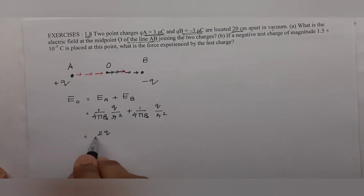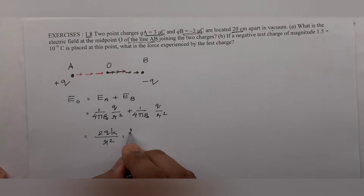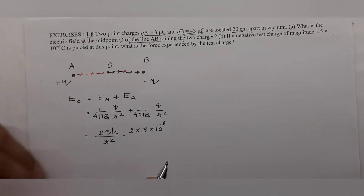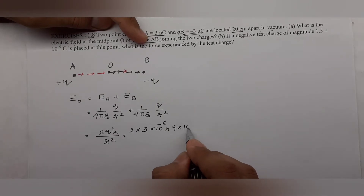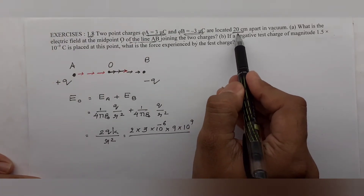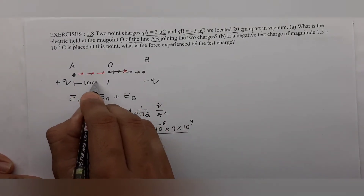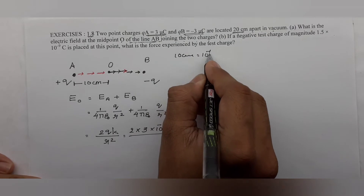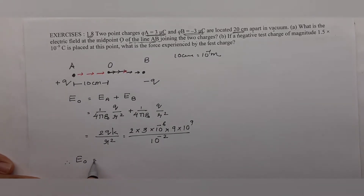So Eo = 2 × k × q / r². Substituting: k = 9 × 10⁹, q = 3 × 10⁻⁶ microcoulombs. The distance between the two charges is 20 centimeters, and half of 20 is 10 centimeters — so r = 10 cm = 10⁻¹ m, giving r² = 10⁻² m².